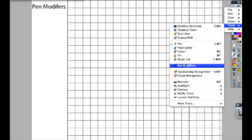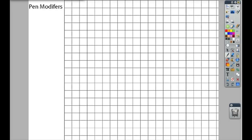And pen modifiers will pop up along the side next to my toolbar. Now I can select horizontal or vertical lines, and wherever I click, no matter where I move my pen, it creates a horizontal line for me.